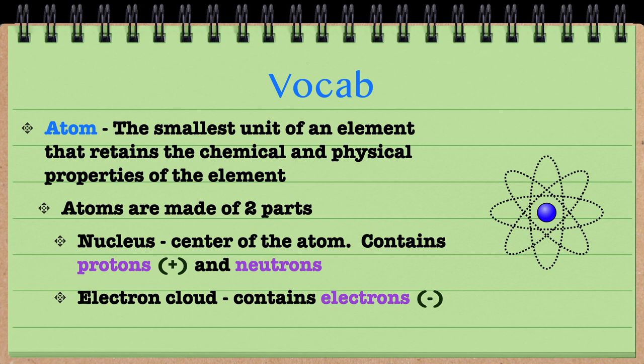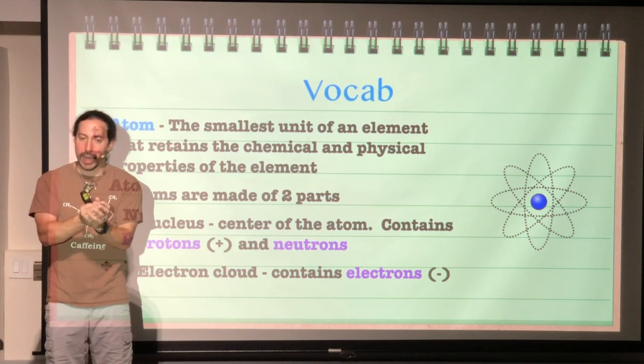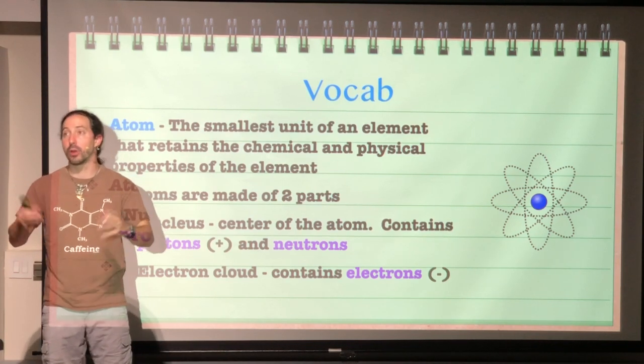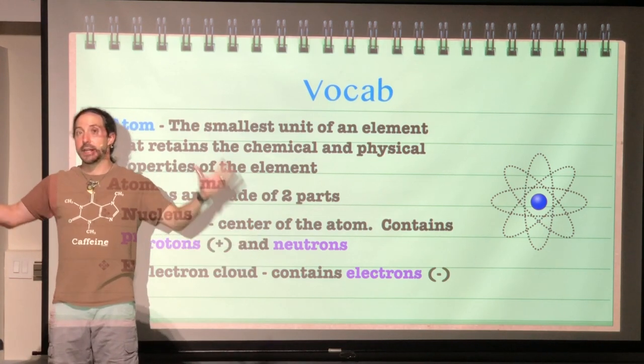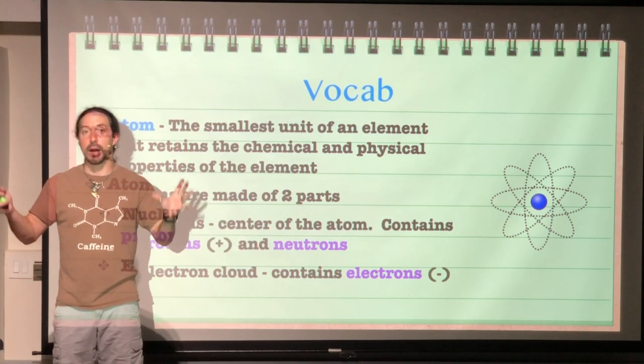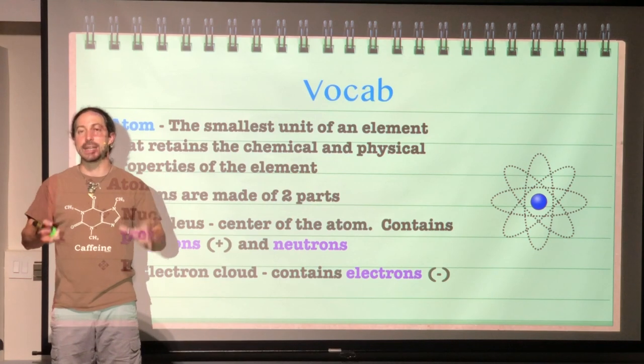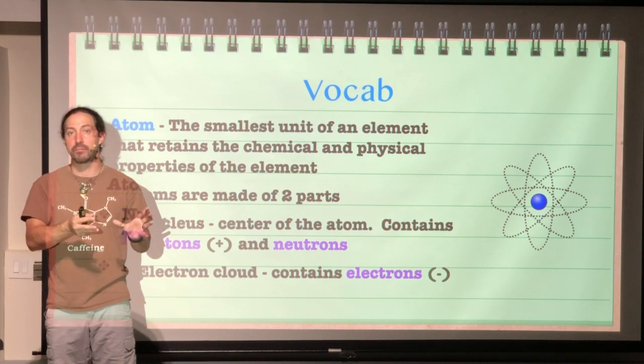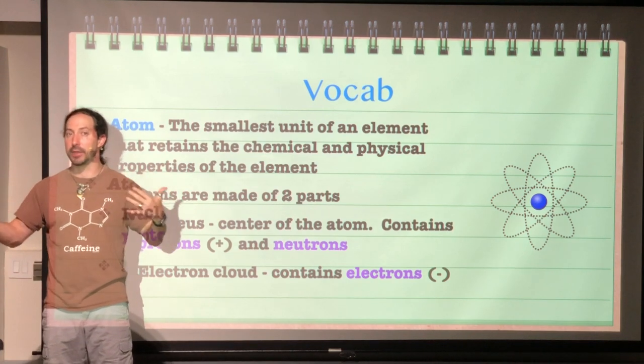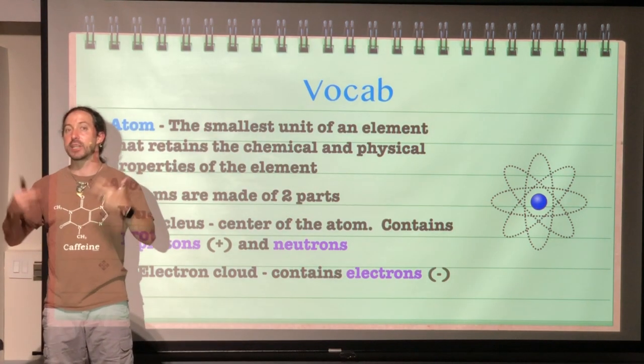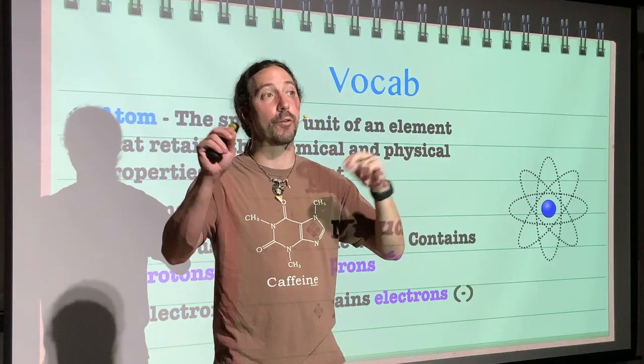They're the smallest unit of a specific element that still retains the properties of that element. See, atoms, it doesn't matter if you have one atom or if you have a million atoms or if you have just an innumerable amount of atoms. If they are all of the same element, they will have the exact same properties. But if they're of different elements, then they will have different properties.